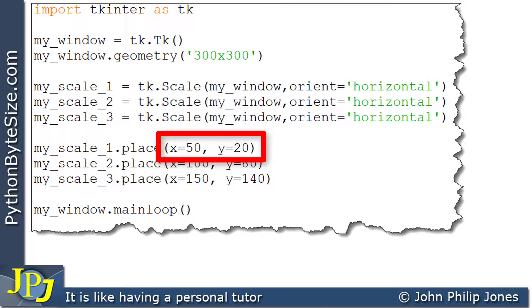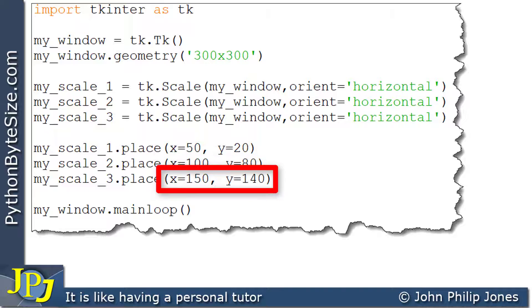For example, you can see x is 50 and y is 20, whereas below here you can see x is 100 and y is 80, and finally here you can see that x is 150 and y is 140.